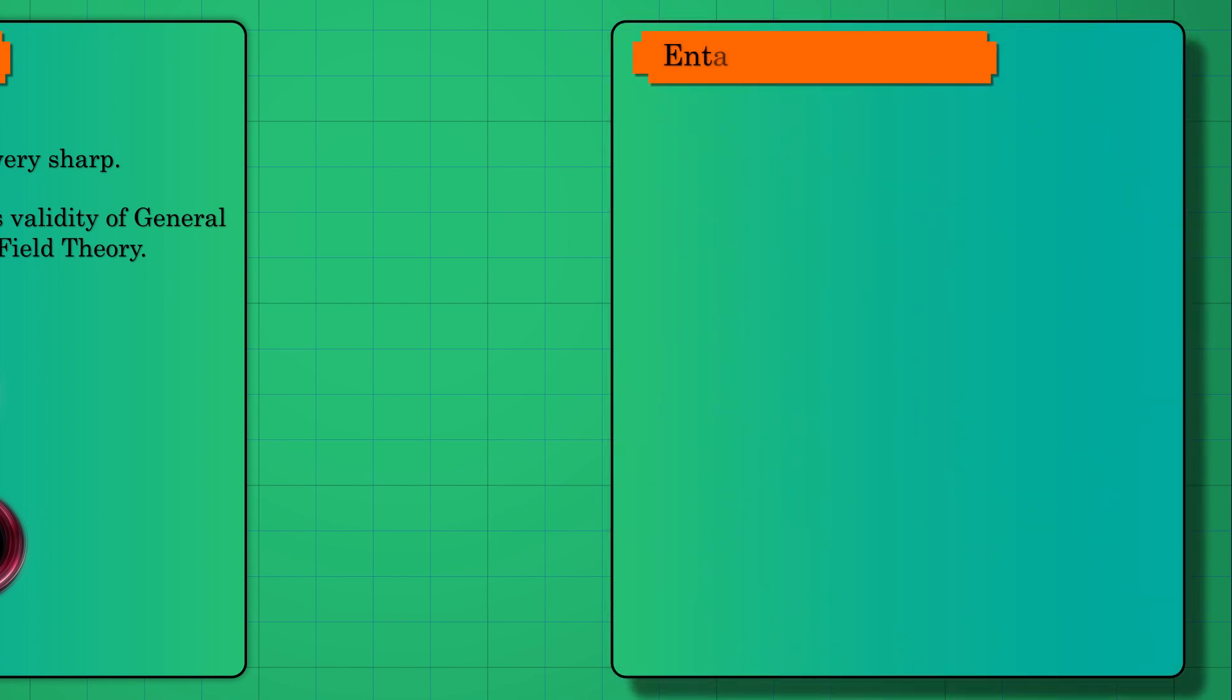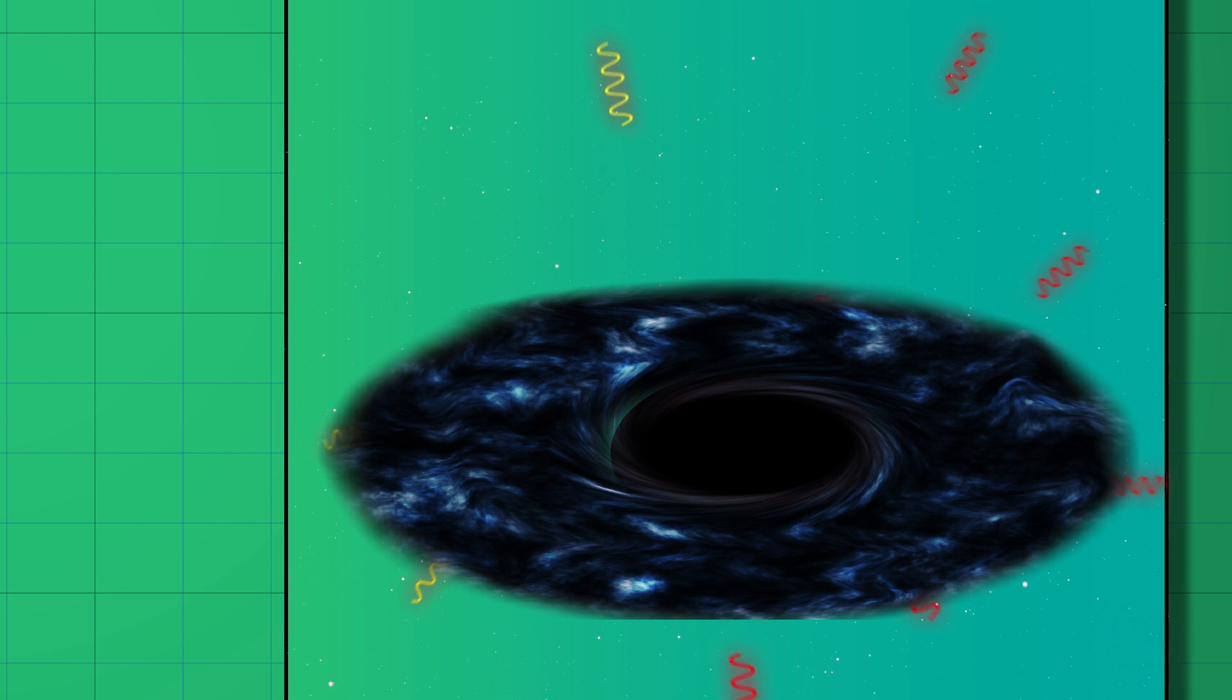Entanglement holds the key to the Hawking paradox. The pair of particles emitted from the horizon are entangled with each other. One half falls into the black hole while the other radiates away.